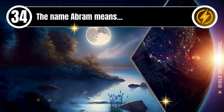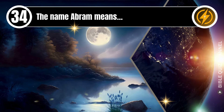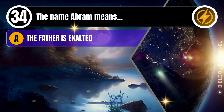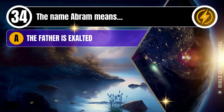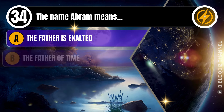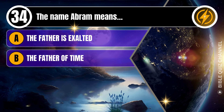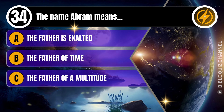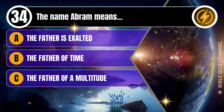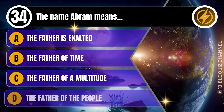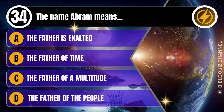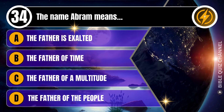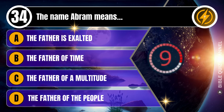Question 34. The name Abram means: A. The Father is exalted. B. The Father of time. C. The Father of a multitude. D. The Father of the people. You get 10 seconds.